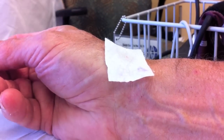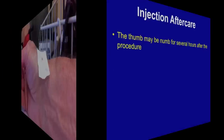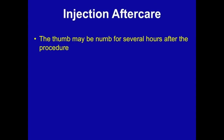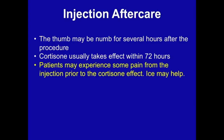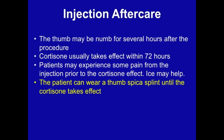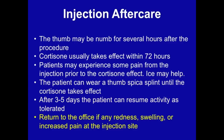Withdraw your needle, clear your sharp safely, apply a band-aid, and then discuss post-injection instructions. Warn your patient that their thumb may be numb for several hours after the procedure. The steroid usually takes effect within 72 hours; patients may experience some pain from the injection before the steroid takes effect. To minimize pain, patients can use ice or a thumb spica splint for the first few days. After three to five days, the patient can resume activity as tolerated.